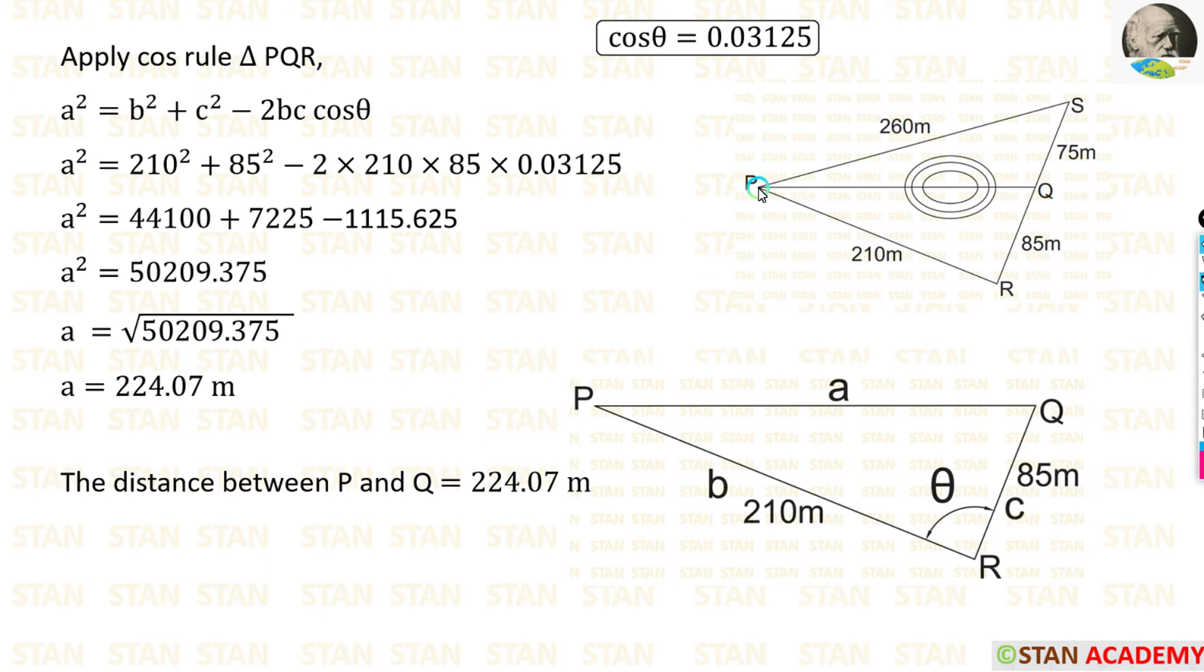Now we are going to find out the distance between P and Q. For that I am going to take the triangle PQR. In the triangle PQR also, I am going to apply the cosine rule. Here also we have to be very careful that A must be selected on the opposite side of the angle theta. B and C can be made here or here.